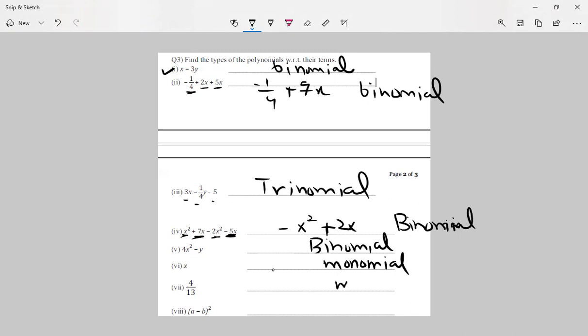Now see it very critically. We know that the perfect square of this one is a square minus 2ab plus b square. There are three terms, it's called trinomial.